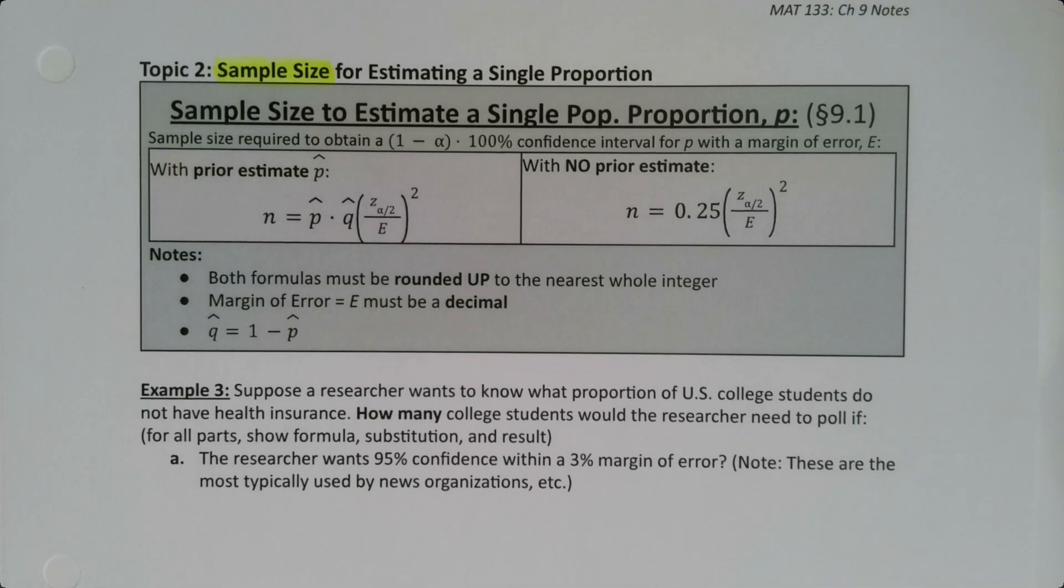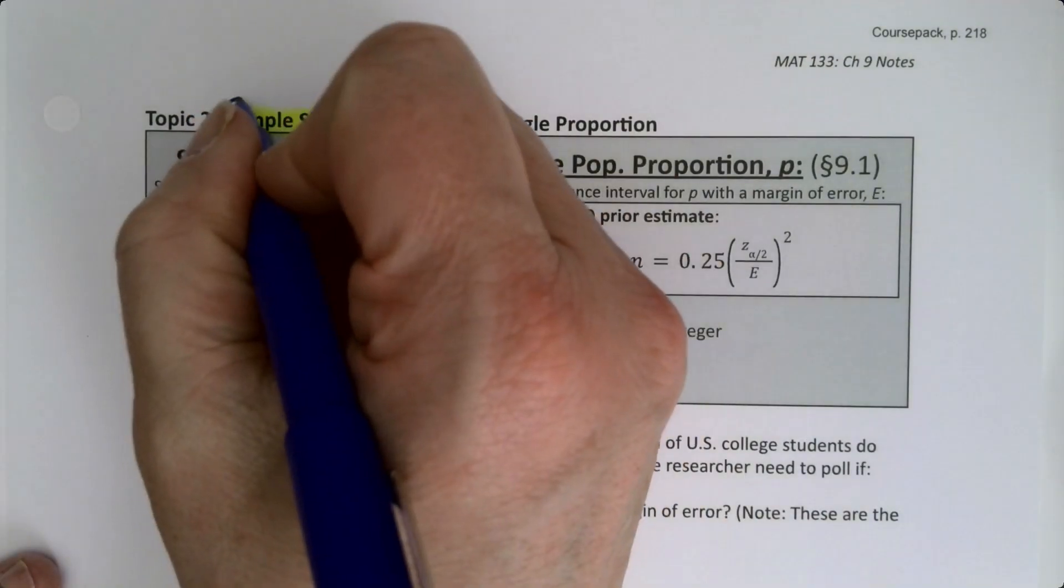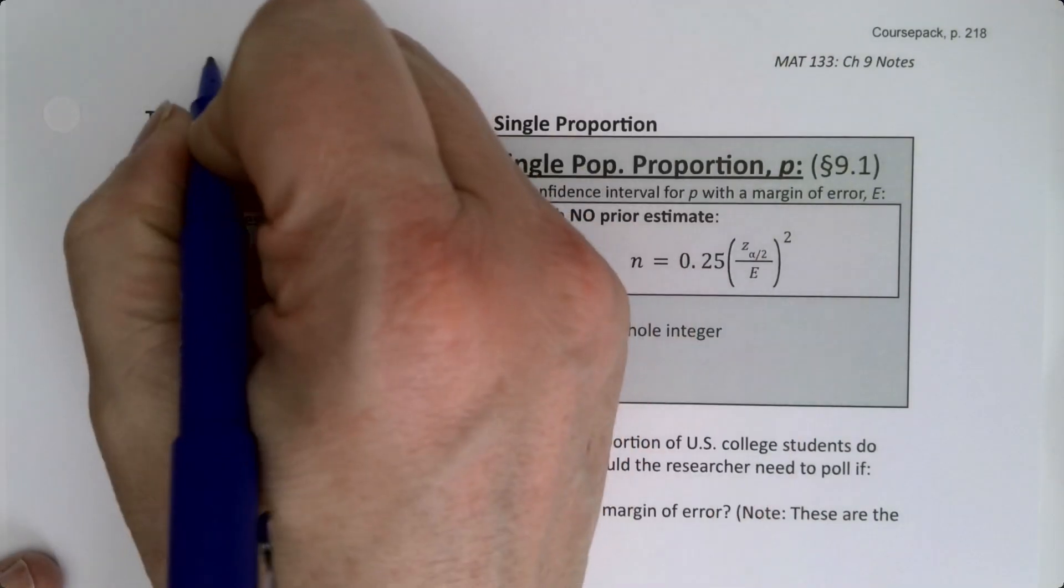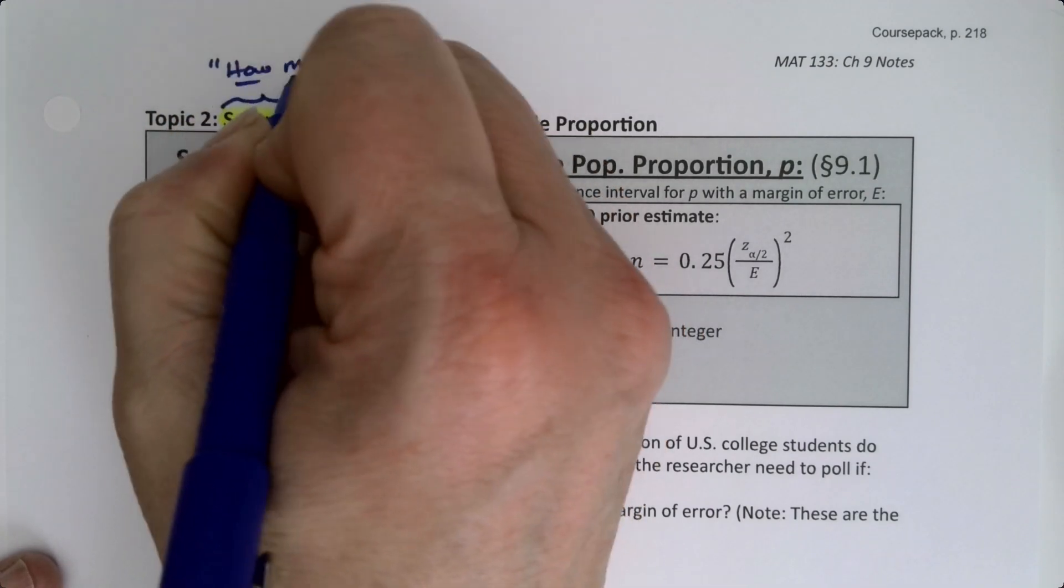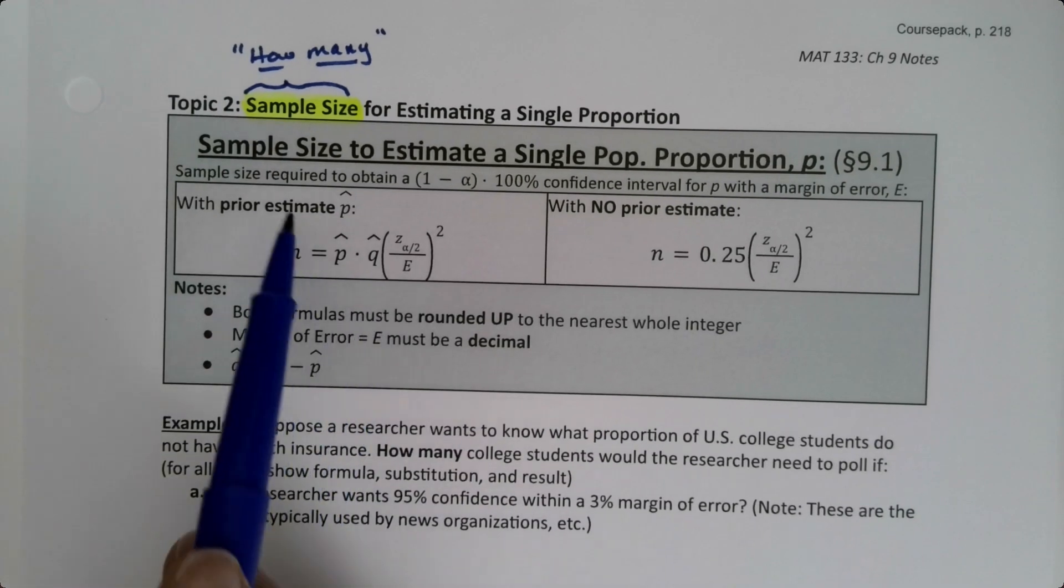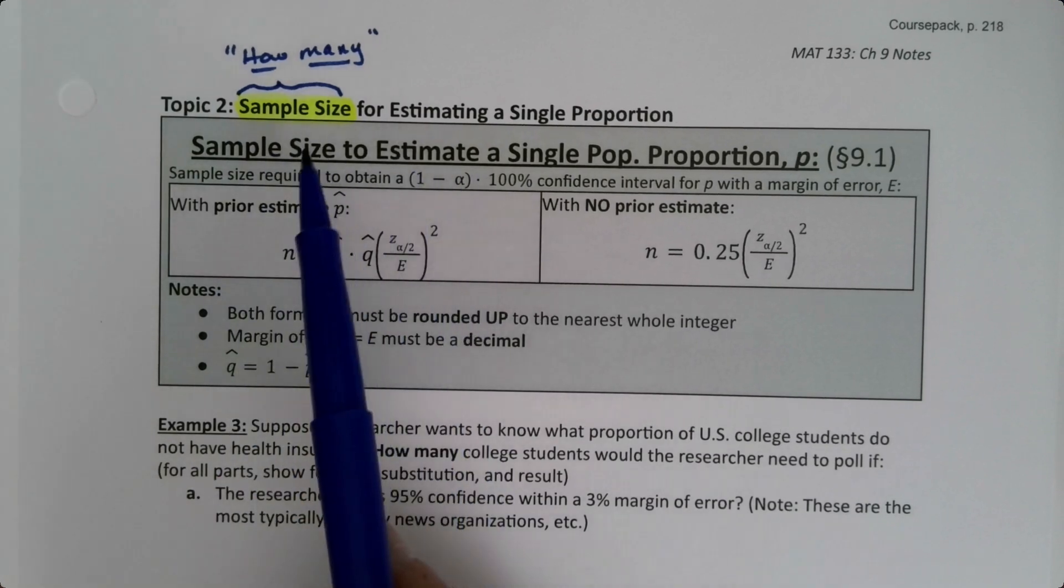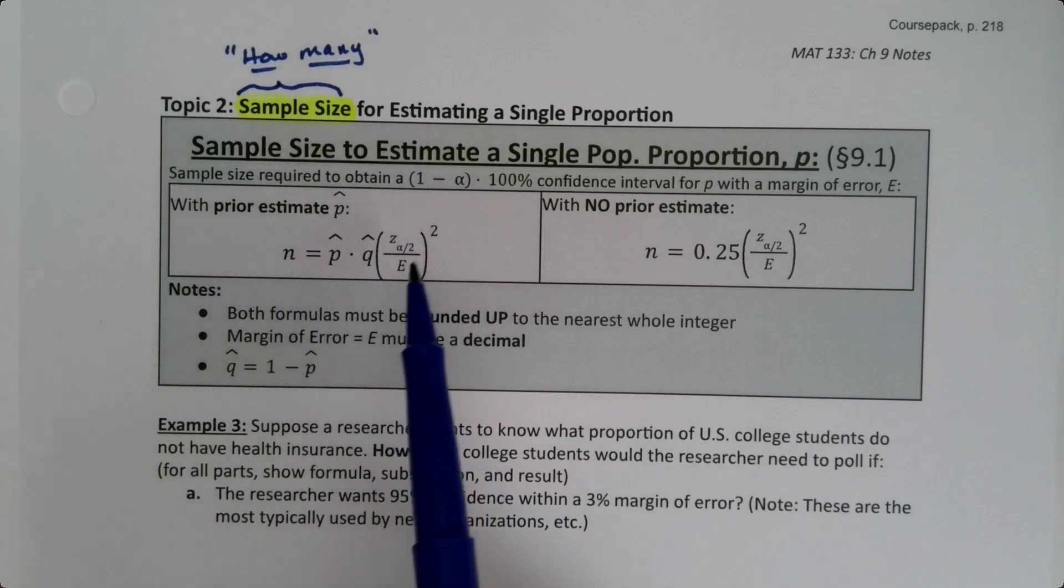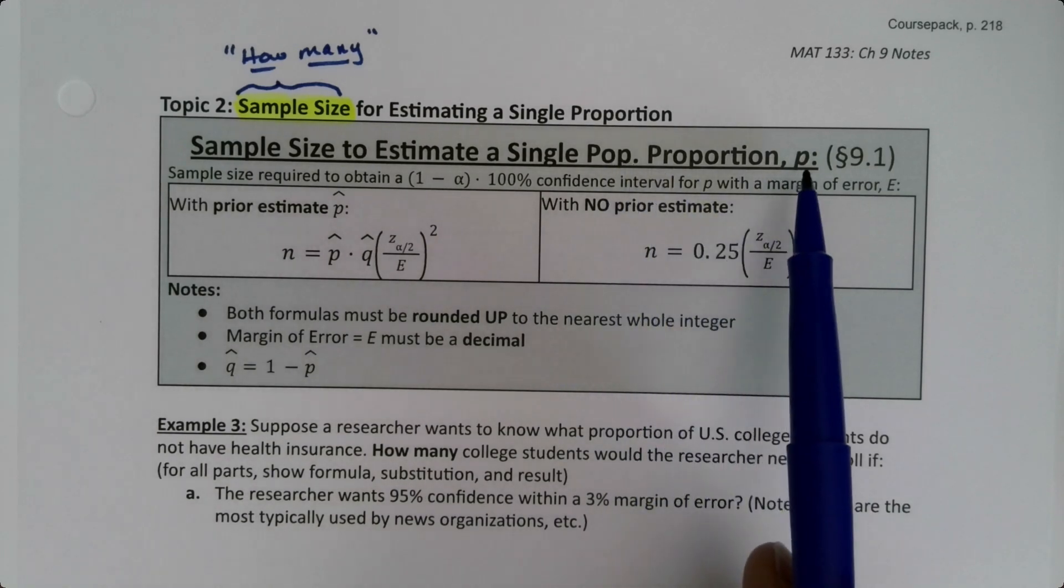Now we need to move on to the second topic of this section, which is sample size. Sample size is something that has to be figured out ahead of time by researchers and pollsters because they need to know how many people they need to talk to, or how many tires they need to test. A sample size is a question of how many are we going to look at to estimate a single proportion p.